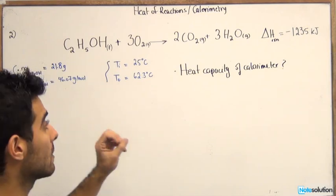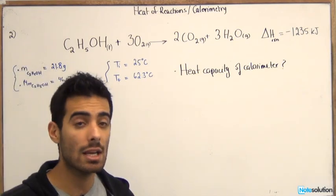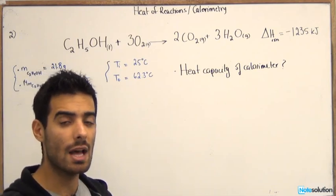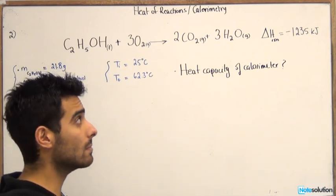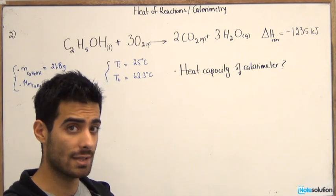Now before I get into that, delta H reaction is negative 1235 kilojoules. What does that mean? Does that mean that the reaction is endothermic or exothermic? Well, an endothermic reaction is a reaction that has delta H positive.